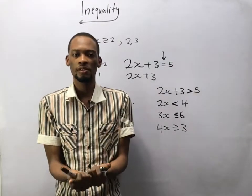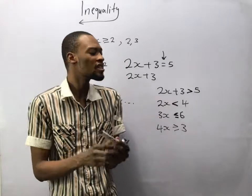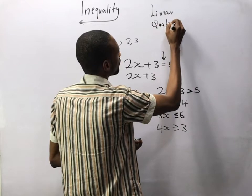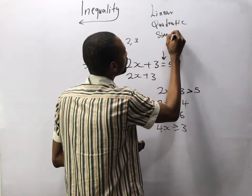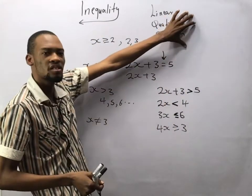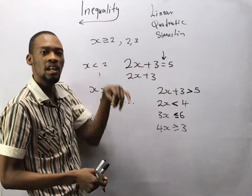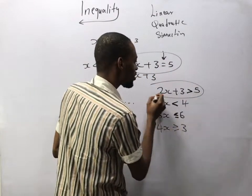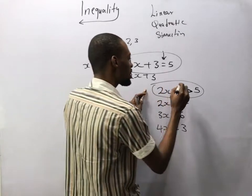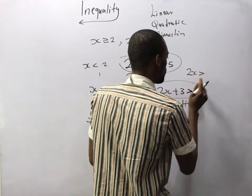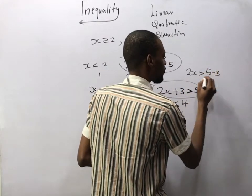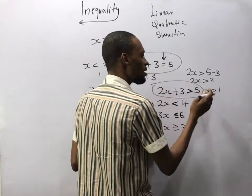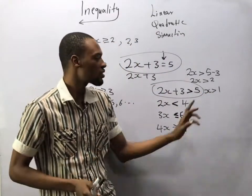Now, how do you solve inequality questions? We solve inequality questions the same way we solve equations. We have linear inequalities, quadratic, and simultaneous inequality. For a linear inequality, you solve it the way you solve equations normally. For example, 2s plus 3 greater than 5 gives you 2s greater than 5 minus 3, so 2s is greater than 2, and dividing both sides by 2, s is greater than 1.